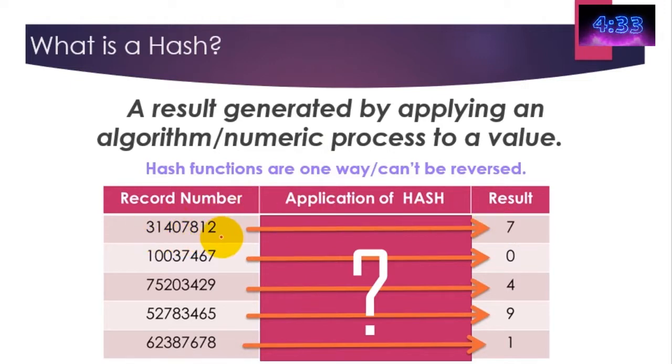So the result of this record being hashed gives you the number seven. If you take this record number and hash it, it produces the result of zero. How it does it isn't important—that's the whole point of a hash function. Hash functions are one-way and cannot be reversed. It's not possible to get a number four here and then backward engineer it to find the answer 7520342.